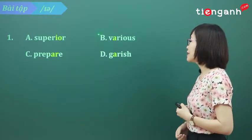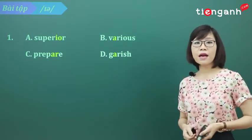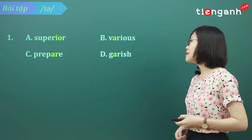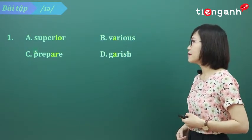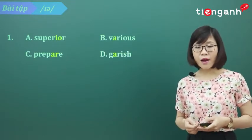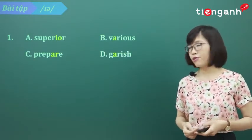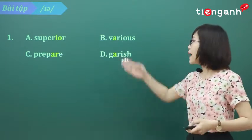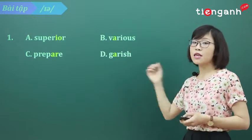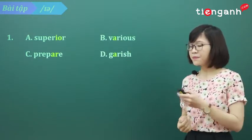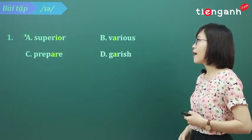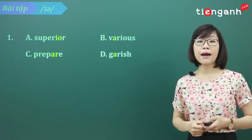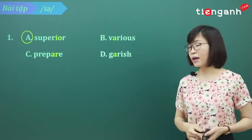Từ B của chúng ta phát âm là 'various' — 'air'. Từ C của chúng ta phát âm là 'prepare' — cũng là 'air'. Và từ cuối cùng là 'garish'. B, C và D của chúng ta đều phát âm là 'air'. Chỉ riêng từ A phát âm là 'superior' — 'ear'. Vậy thì A chính là đáp án — là từ mà phát âm khác 3 từ còn lại.